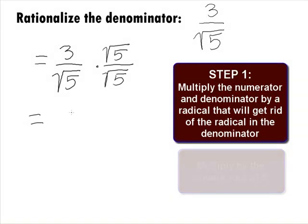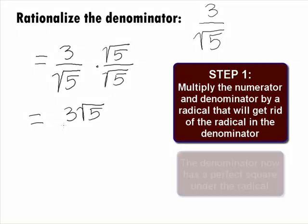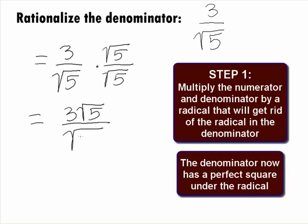When we do this, we end up with 3 square root of 5 over square root of 25.